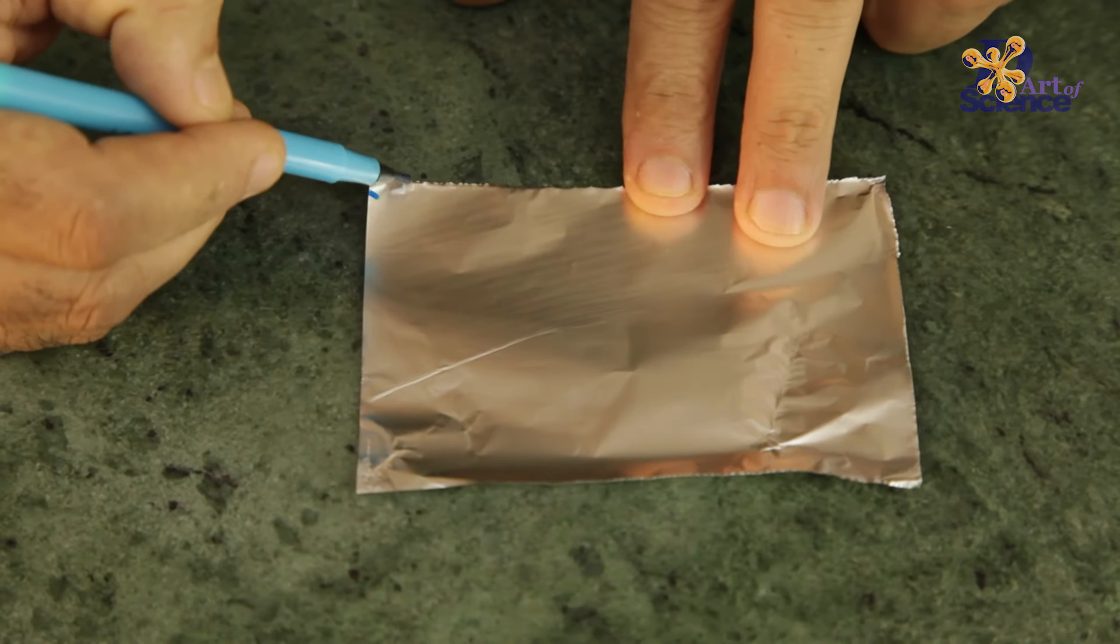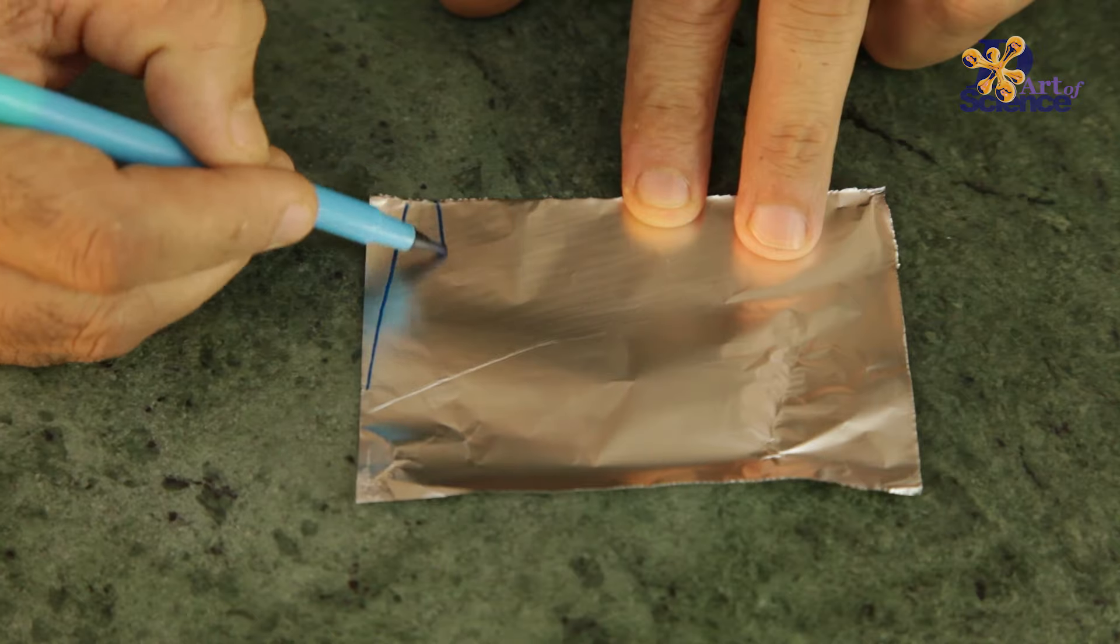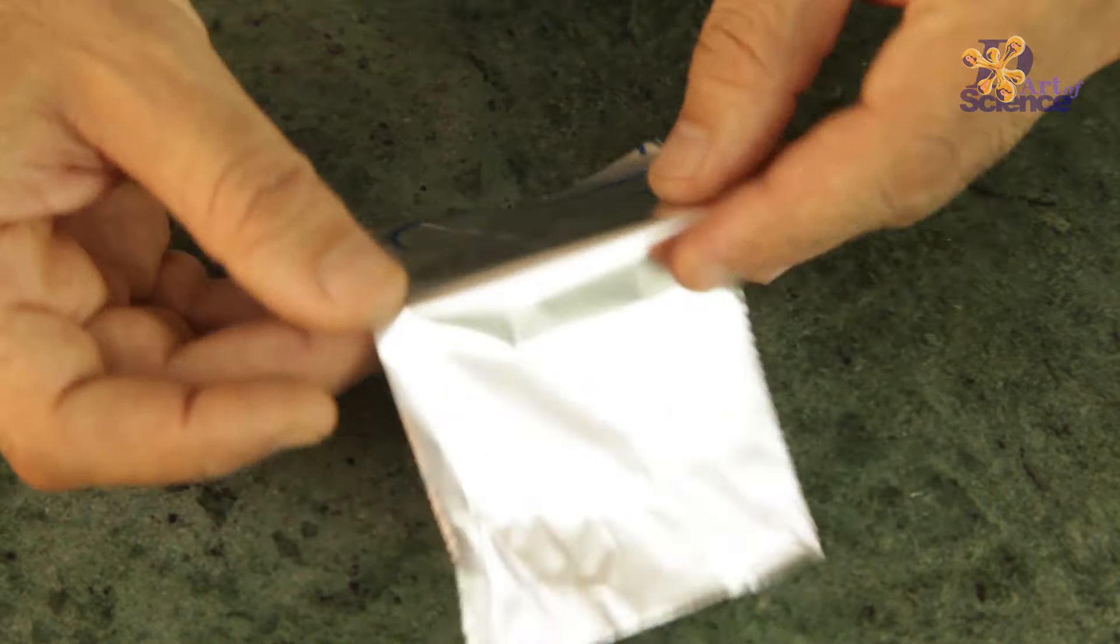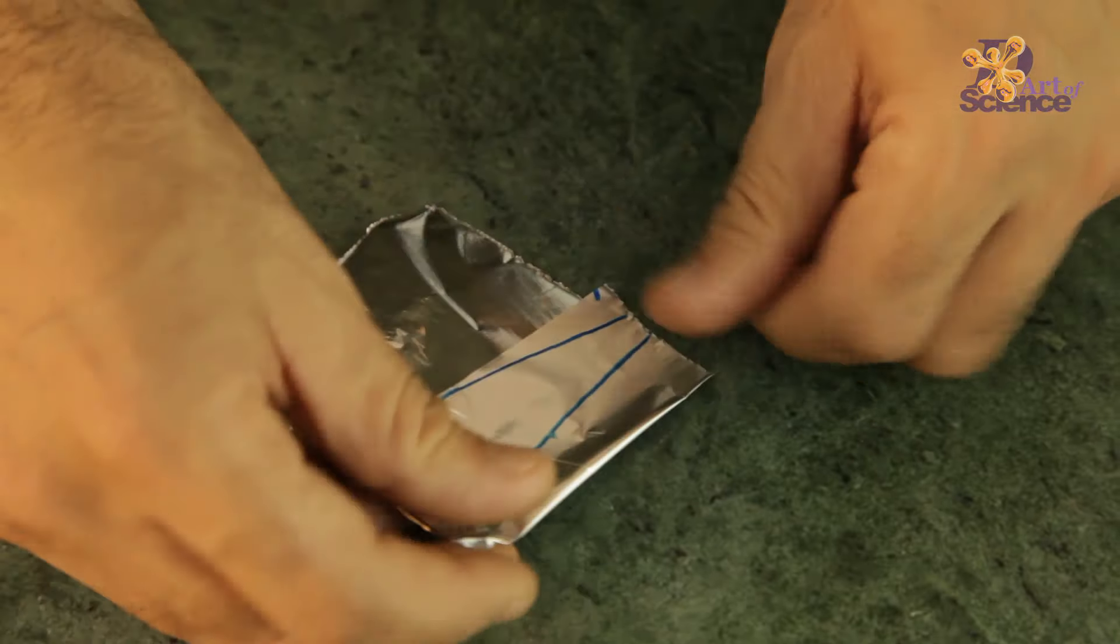Now we need to make the leaves and for that you need thin aluminium foil. Make an outline of a thin leaf like this and put two layers of foil and cut them together.